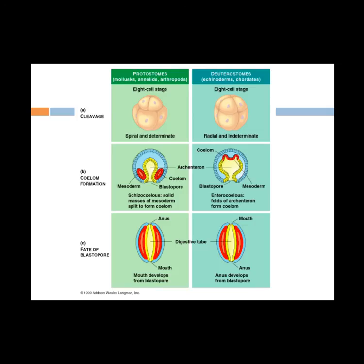The coelomates are divided into two grades: the protostomes and the deuterostomes. The protostomes are mollusks, annelids, and arthropods. Mollusks include clams, snails, and octopus. Annelids are segmented worms like leeches and earthworms, and arthropods include crustaceans, insects, and spiders. The deuterostomes are echinoderms and chordates. Echinoderms include starfish and sea urchins. Chordates include lancelets, tunicates, and vertebrates.